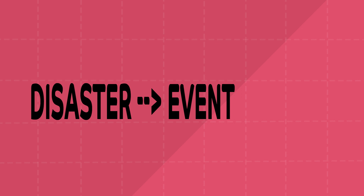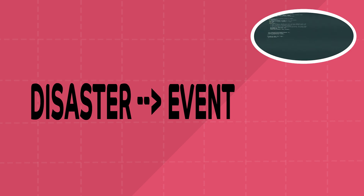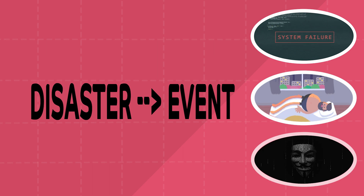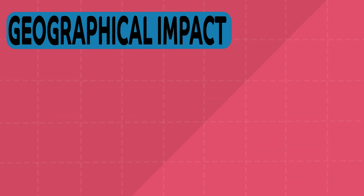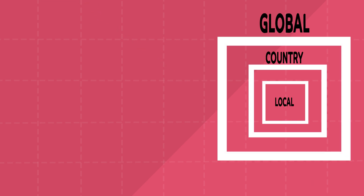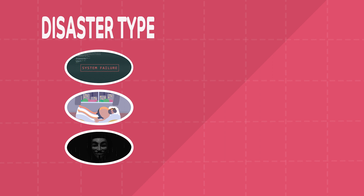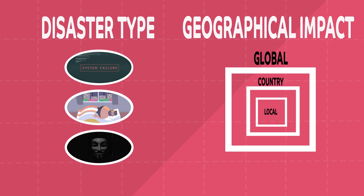Think of a disaster as an event that prevents your system from fulfilling its business objectives in its primary deployed location. An event could be a technical failure, a natural disaster, or human actions. Each of these potential disasters will also have a geographical impact that can be local, countrywide, or global. Both the nature of the disaster and the geographical impact are important considerations for any DR strategy.